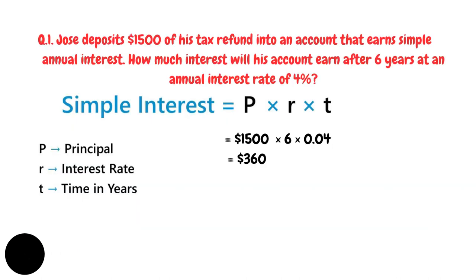Example one: Josh deposits $1,500 of his tax refund into an account that earns simple annual interest. How much interest will his account earn after 6 years at an annual interest rate of 4%? Using I = PRT: P = $1,500, R = 4% which is 0.04, T = 6 years. Four percent divided by 100 gives 0.04, so multiplying gives a simple interest of $360.